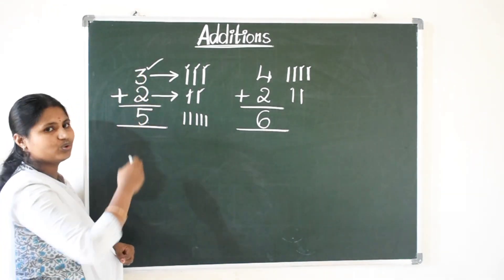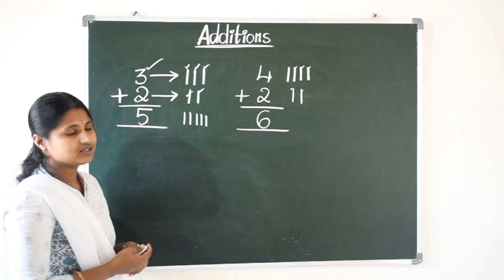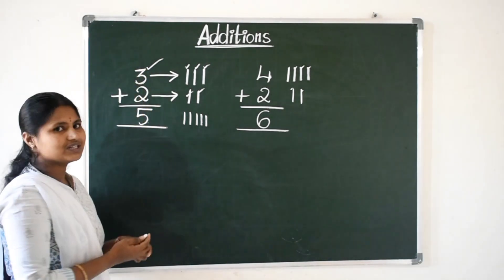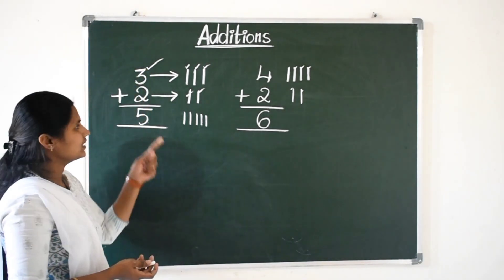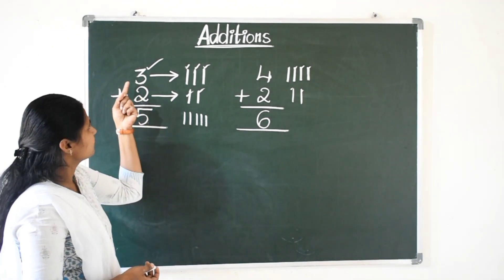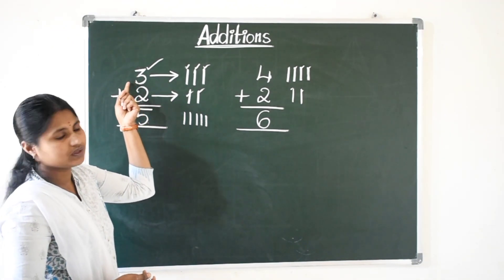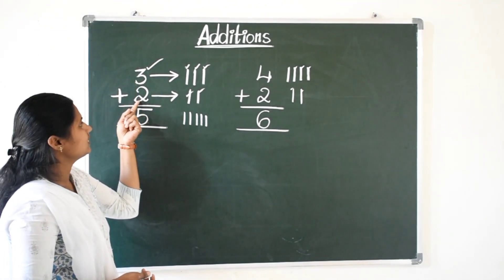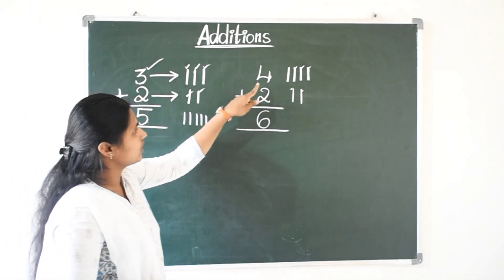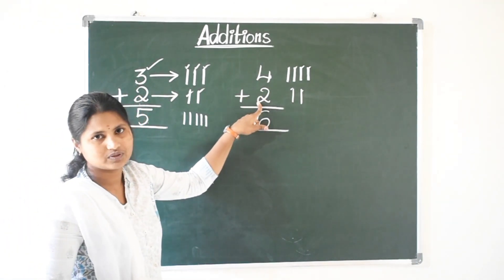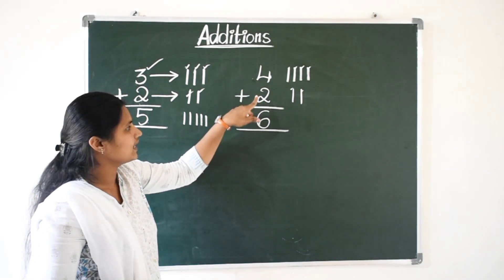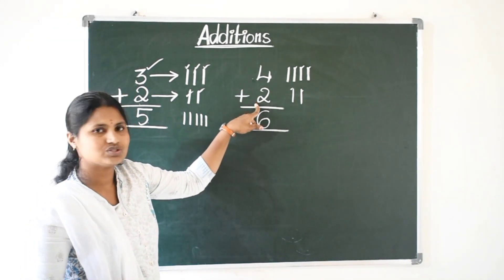So here we have added two numbers. This first number is called first addend and this one is called second addend. Here what is the first addend? Three. And the second addend is two. Here also we have two addends. First one is four, second addend is two.